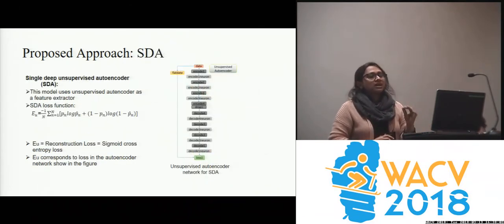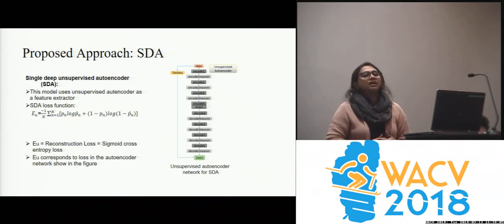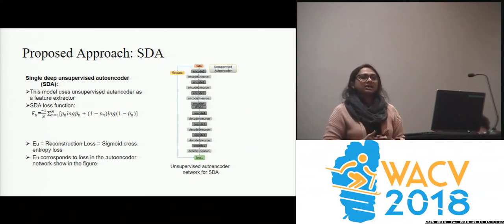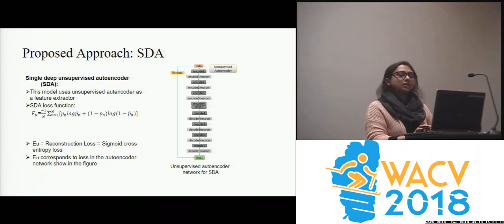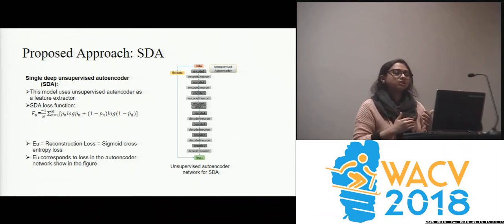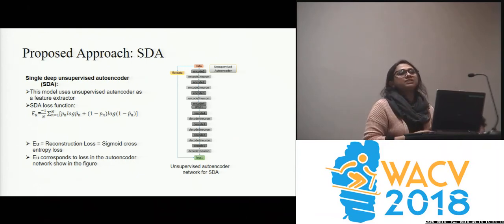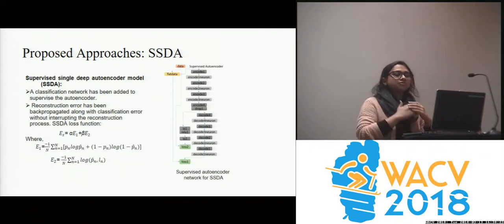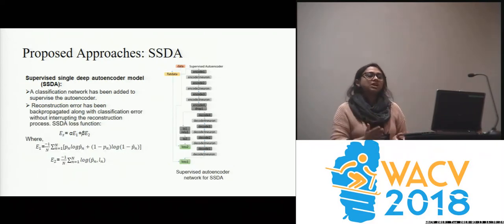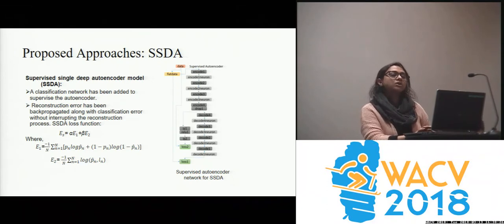In our unsupervised approach, we use an unsupervised autoencoder as a feature extractor, and the loss function is a typical sigmoid cross-entropy loss function. The unsupervised autoencoder has four encoder layers and four decoder layers, and to avoid overfitting, we use a dropout layer after the encoder part.